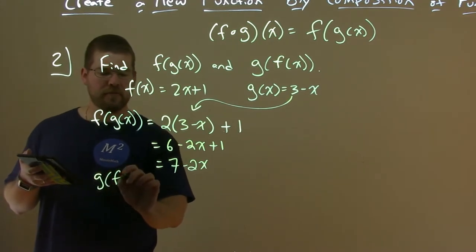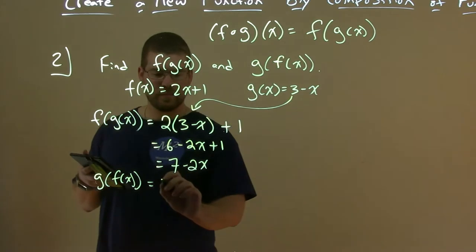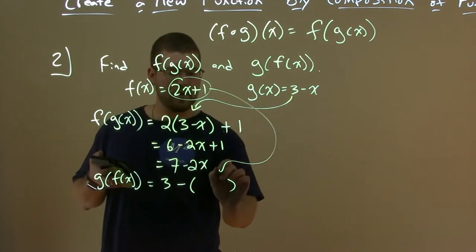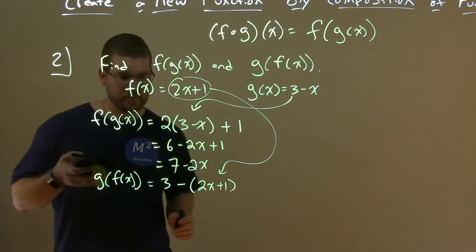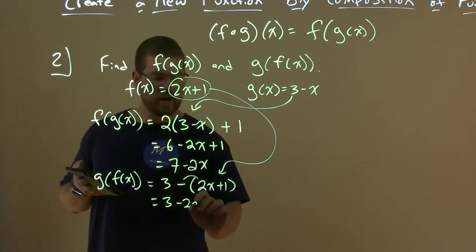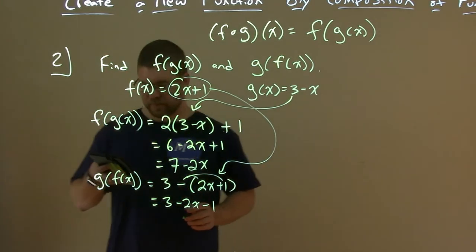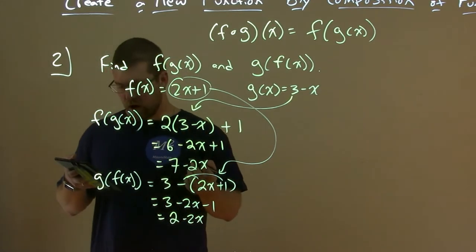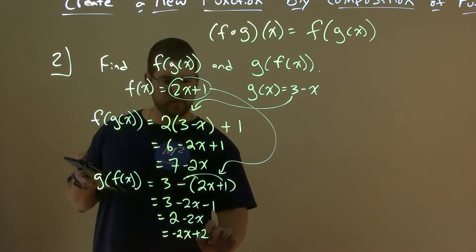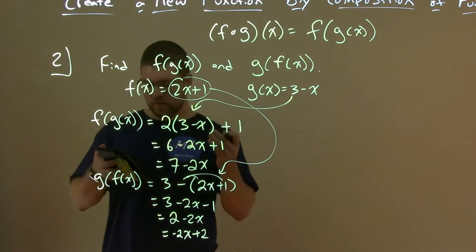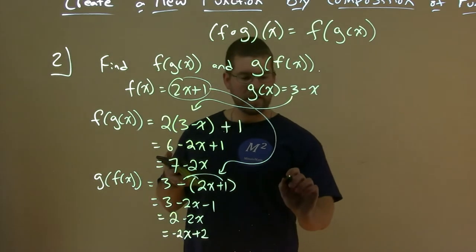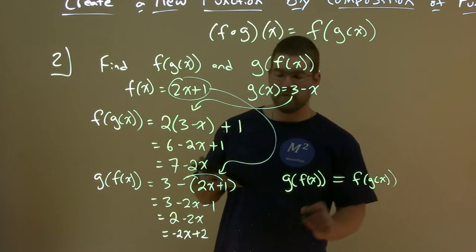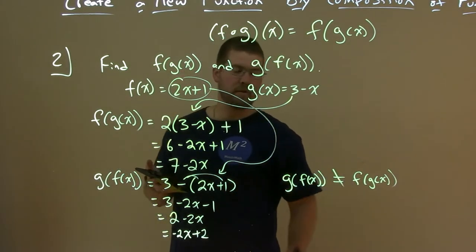Now let's find g of f of x. Same idea — we start with g of x: 3 minus, and instead of x I put parentheses and plug in 2x plus 1. Simplify: distribute the minus sign to get 3 minus 2x minus 1. Then 3 minus 1 is 2, so we have 2 minus 2x, or equivalently minus 2x plus 2. What they're asking is whether this operation is commutative — is g of f of x equal to f of g of x? Are these two equal? No. So they're not commutative.